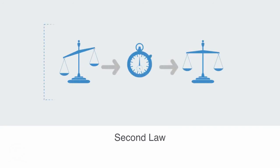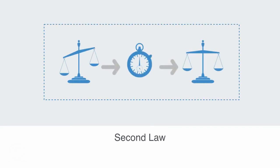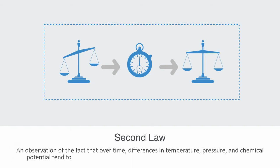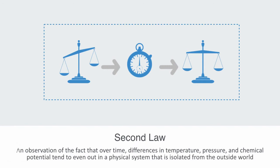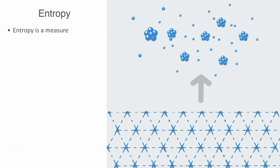The second law of thermodynamics is an expression of the universal principle of dissipation of kinetic and potential energy observed throughout nature. The second law is an observation of the fact that over time, differences in temperature, pressure, and chemical potential tend to even out in a physical system that is isolated from the outside world. The entropy of an isolated system that is not in equilibrium tends to increase over time, approaching a maximum value at equilibrium. Entropy is a measurement of the number of degrees of freedom a system has. Take the example of a perfect crystal, in which the atoms are all locked into rigid positions in a lattice formation, so the number of ways they can move around is quite limited. In a liquid, the options increase considerably. In a gas, the atoms can take on many more configurations. This is why the entropy of a gas is higher than a liquid, which is in turn higher than a solid.